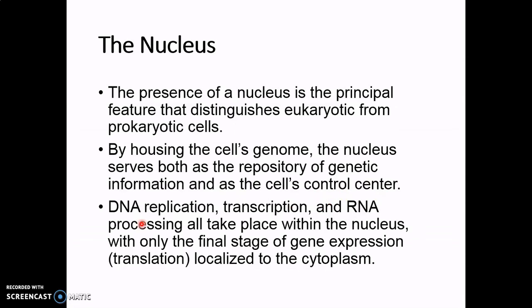The reason the nucleus can act as a control center is because all of the DNA replication, transcription, and RNA processing — such as putting on the 5' cap, the poly-A tail, alternative splicing, and various trimming — all of that happens inside of the nucleus. That final version of the messenger RNA is then transported out, and only that final stage, translation, happens in the cytoplasm. This opens up a lot of unique ability to control the process, something prokaryotes can't do.